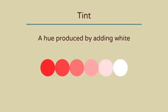A tint is a hue produced by adding white, so now you have a variety of red tints made by mixing the red with increasing amounts of white.